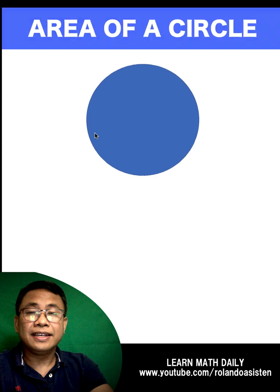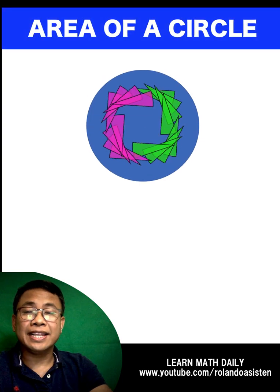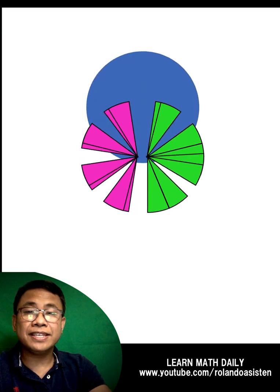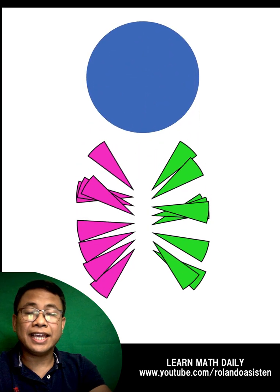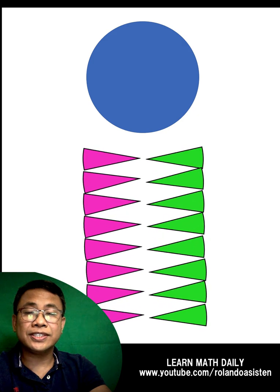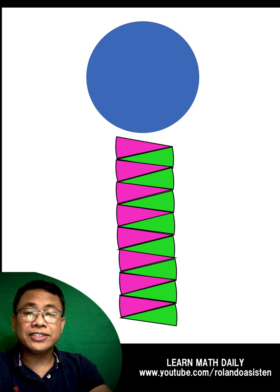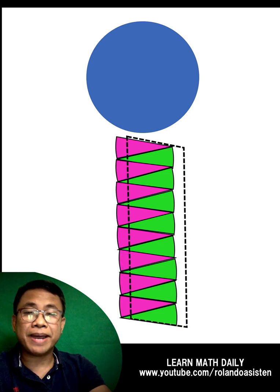Now let's go back to the same circle and cut it into finer smaller sectors like this. Then let's open up these sectors this way and fit these sectors in the gaps so we can form this closed figure. We can now trace the shape of this figure to form a parallelogram again.